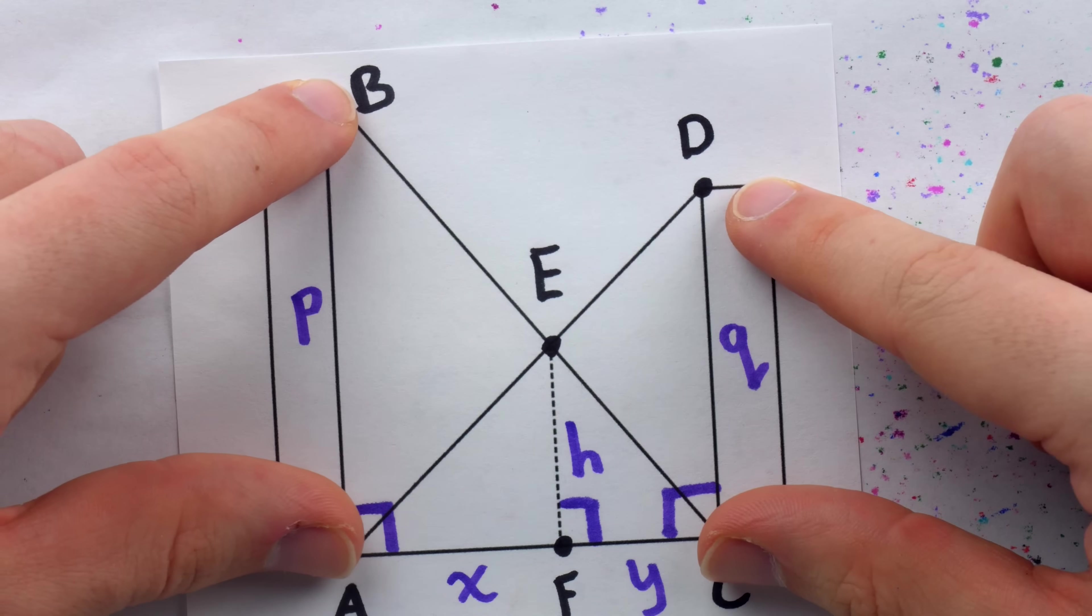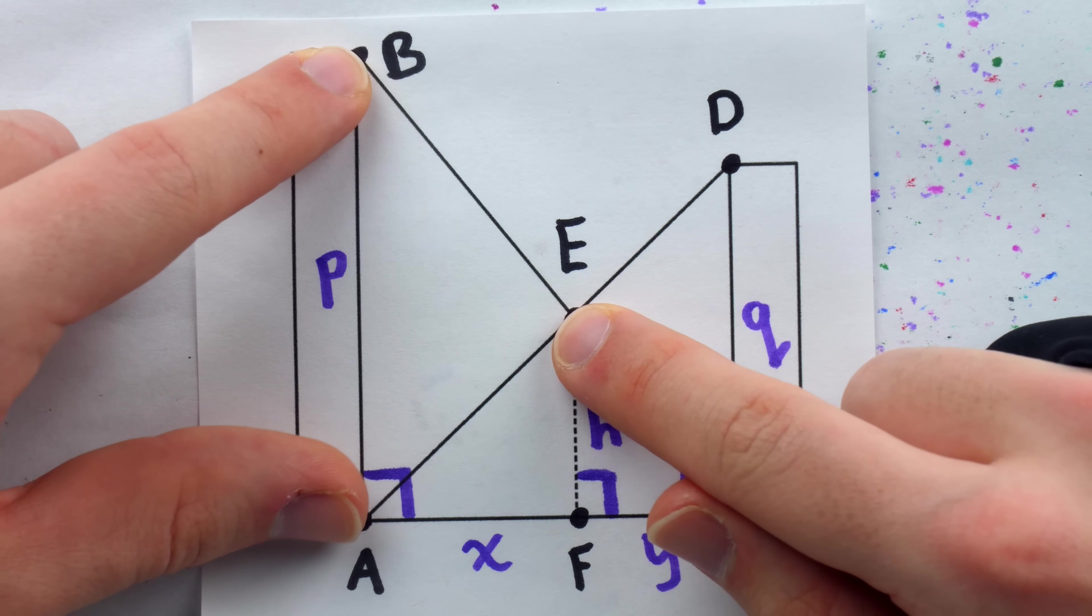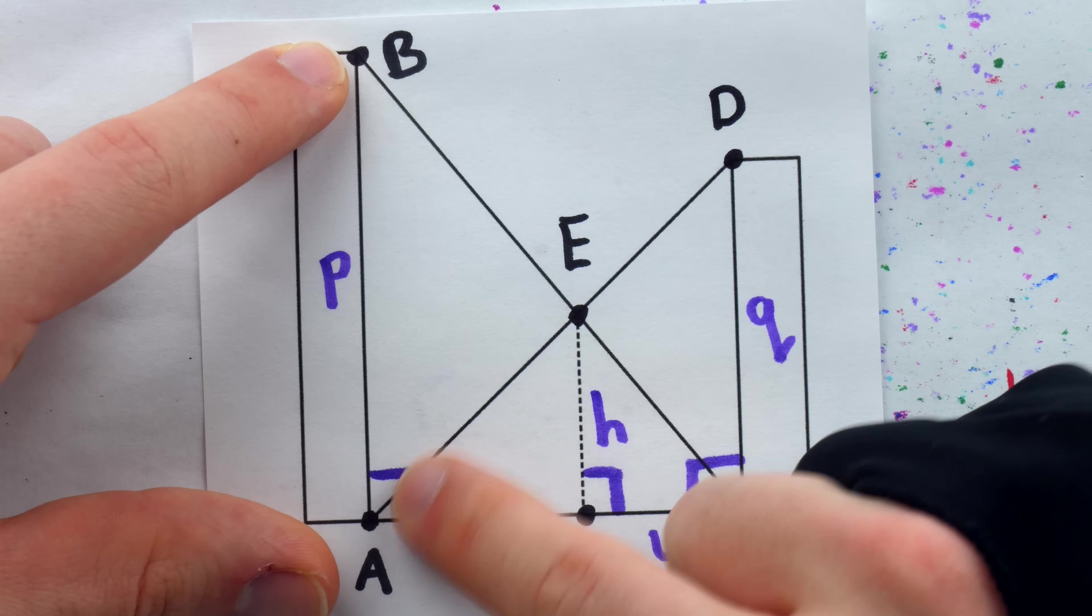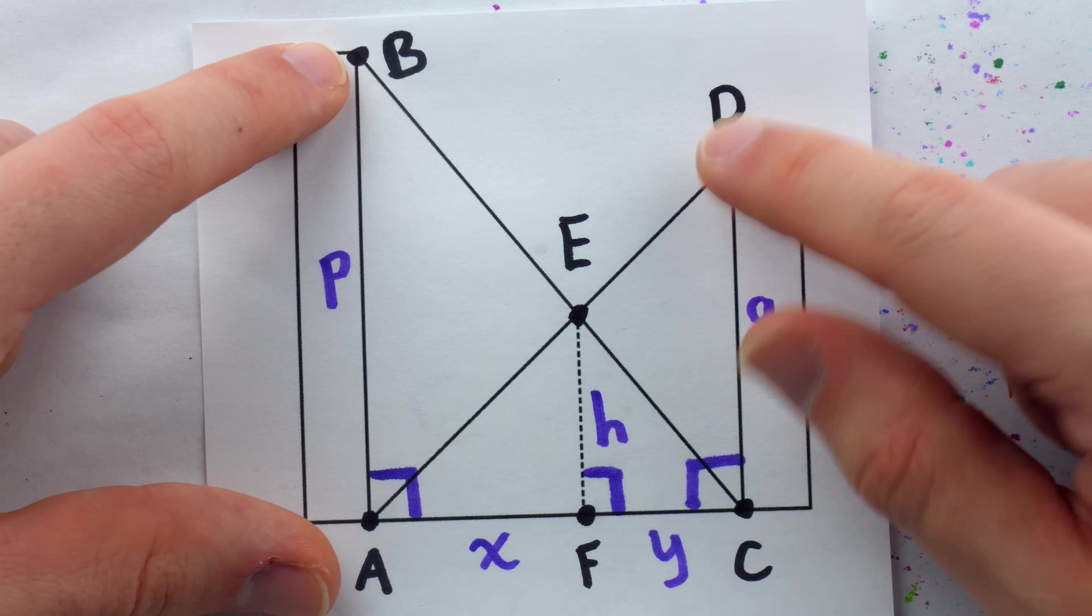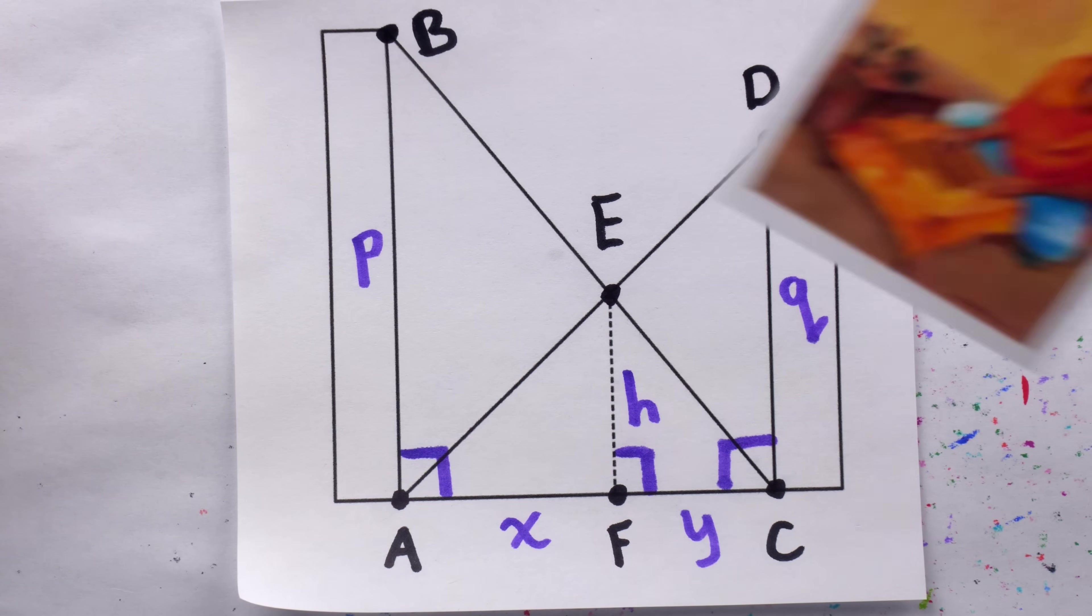But yeah, in this situation, when we have these two pillars, the height of the point of intersection of these two strings is half the harmonic mean of the heights of the pillars. Pretty cool stuff.